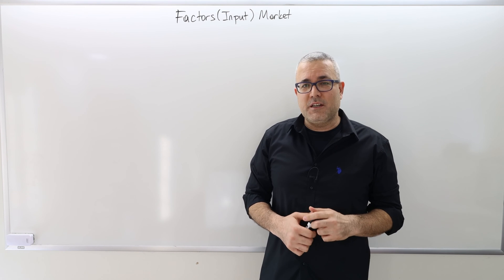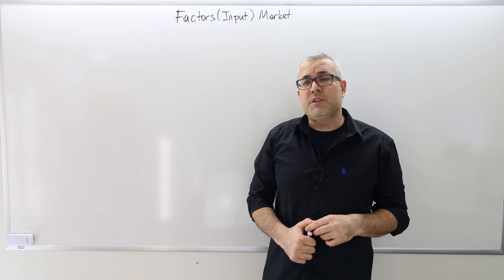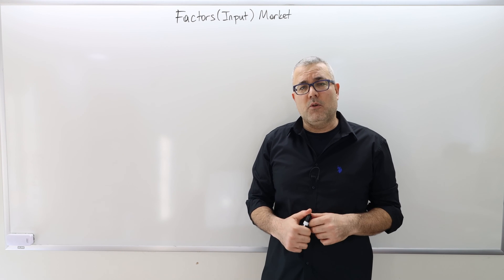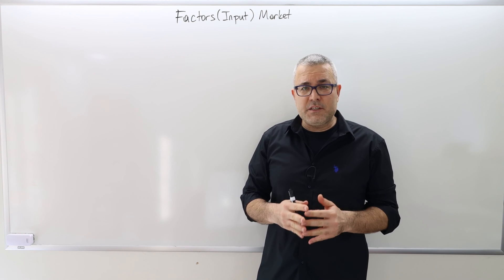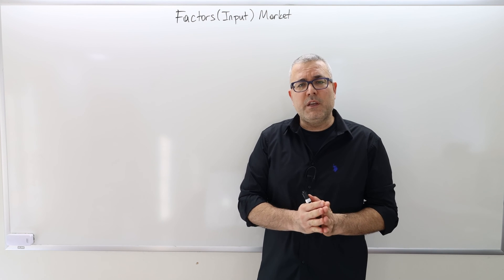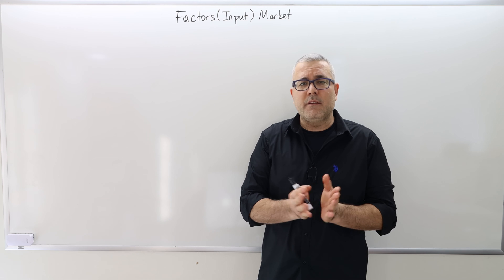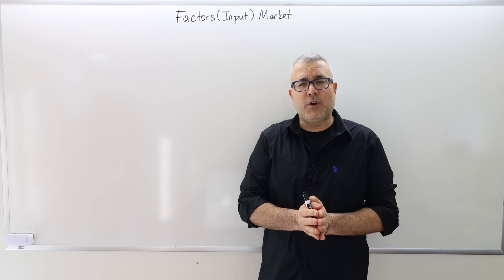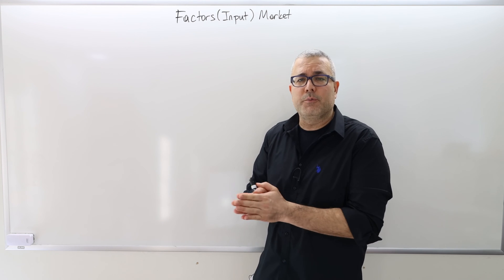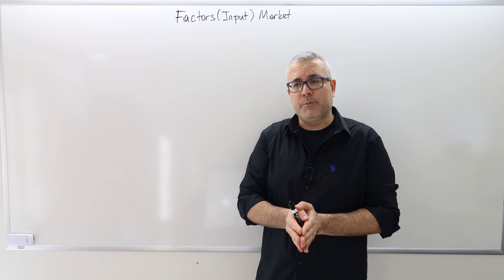In this video, I'm going to start Chapter 3, which is called factors market, or I'd like to call it input market. Here is the main idea. In chapters 1 and 2, we considered the monopoly problem — the monopolist being the unique seller in the output market.